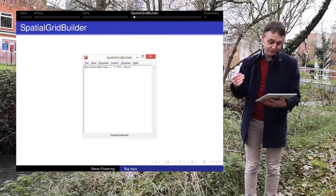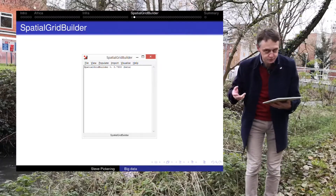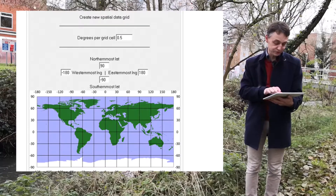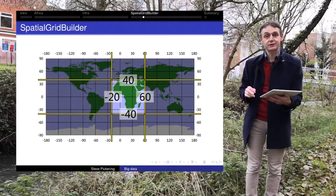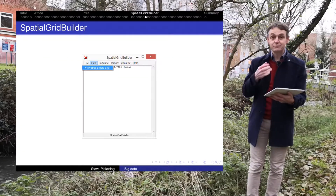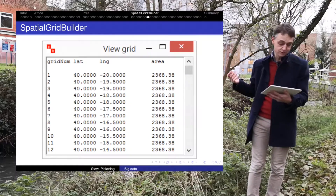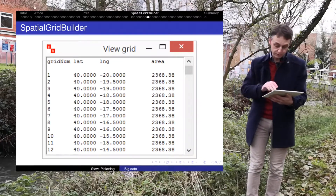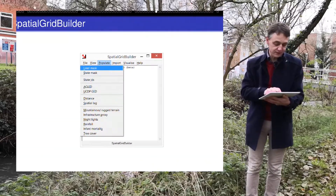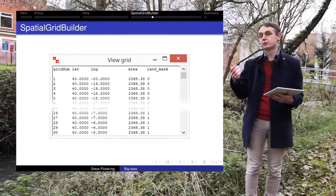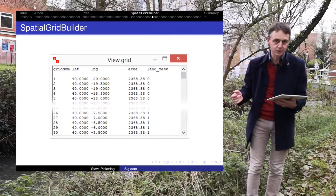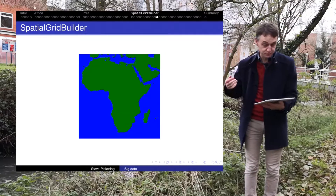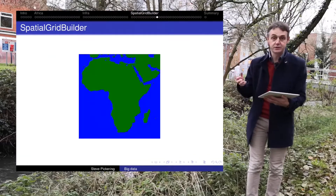Spatial Grid Builder works like this. You have a graphical user interface and you build a new grid, telling it the resolution you want and the parts of the world you're interested in. For the sake of argument, we'll pick Africa, enter those coordinates, and view the spatial data grid. At the moment there's nothing in it — just a grid number, latitude, longitude, and the area of that grid cell, which varies as you approach the poles. Then we populate it with a land mask, which gives us a dummy variable: one if there is land, zero if not. And there's our 0.5 degrees per grid cell map of Africa and surrounding areas.